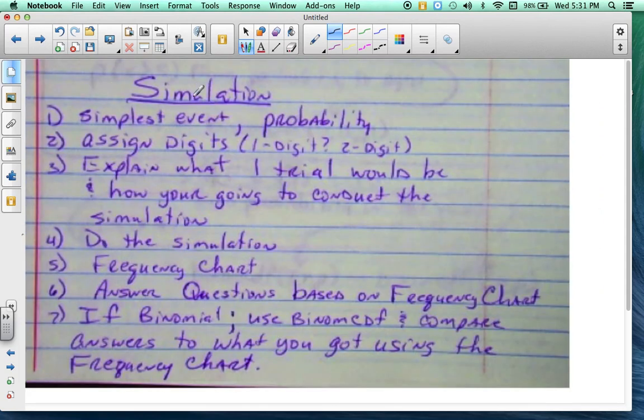Now, let's say if you have a simulation, you need to know that step one is the simplest event. Give me the probability. Step two is assign the digits. Tell me, is it a one digit or a two digit? And step three, explain what one trial would be and how you're going to conduct the simulation. Are you going to choose 10 digits at a time? Are you going to use 20 digits at a time? And again, what is one trial?